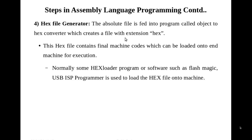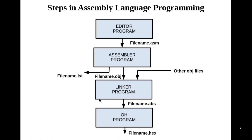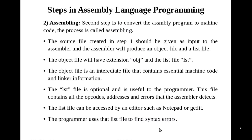These are the four different steps in assembly language programming: first is editing using the editor program; second is assembling, which involves the assembler program, linker program, and object to hex converter program. If we are using a simulator, we do not need the OH program — the linker itself produces the absolute file which can be directly executed on a simulator. If we want to upload machine codes onto a target machine, we require the OH program to convert the absolute file to hex codes.